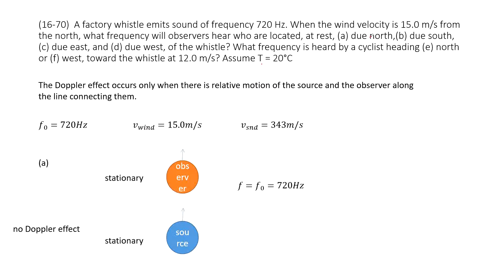The first part tells us the observer is stationary — at rest. If the wind blows due north, the observer is stationary and the source is stationary. There is no relative motion, so there is no Doppler effect; the frequency is just equal to the source frequency. Similarly, if the observer is due south, source stationary, no relative motion, no Doppler effect — the frequency equals the source frequency.